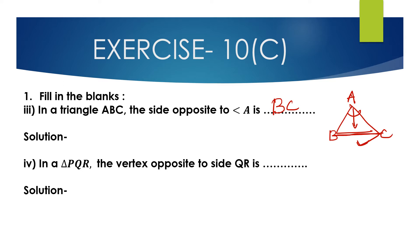Fourth bit: in triangle PQR, the vertex opposite to side QR is dash. The vertex opposite to side QR is P.